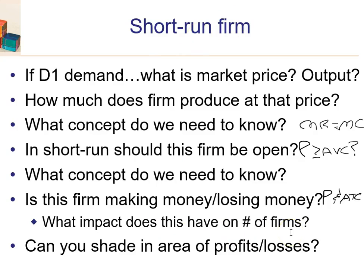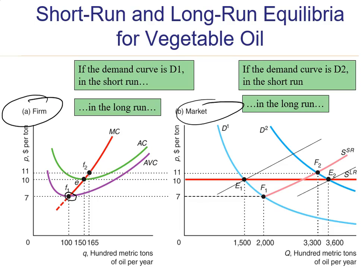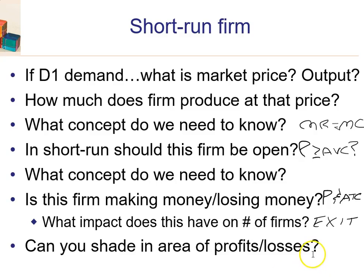Since firms are losing money, what happens to the number of firms in the long run? Firms don't want to keep losing money, so they will exit the industry. We can shade in the losses: producing 100 units, average cost is about $11, price is $7 — you're losing about $4 on every unit, so that's $400 in total losses.